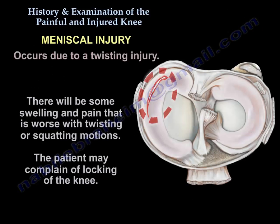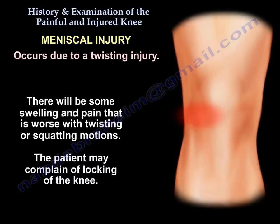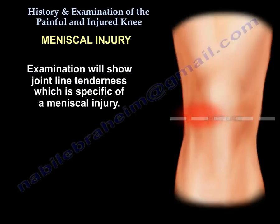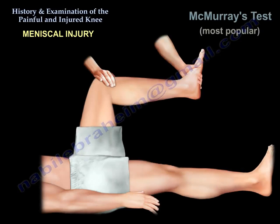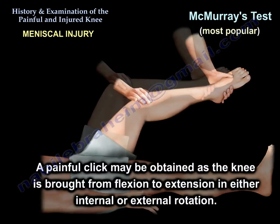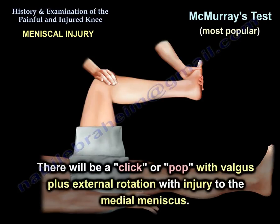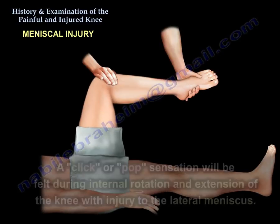A meniscal injury occurs due to a twisting injury. There will be some swelling and pain, which is worse with twisting or squatting motions, and the patient may complain of locking of the knee. Examination will show joint-line tenderness, which is specific for meniscal injury. A McMurray test is used to diagnose the presence of a meniscal tear — a painful click may be obtained as the knee is brought from flexion to extension in either internal or external rotation. External rotation indicates a medial meniscus injury; internal rotation indicates a lateral meniscus injury.